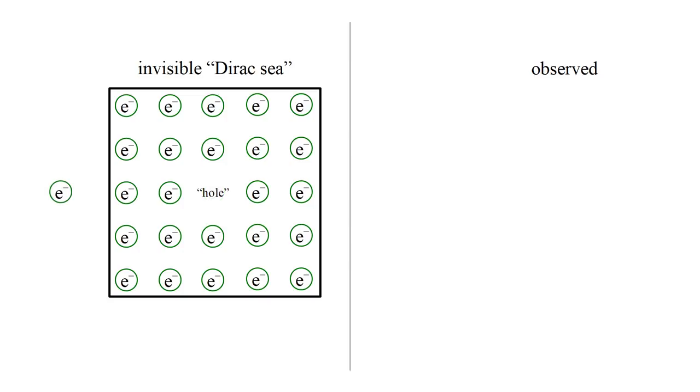By adding energy, we can pull an electron out of the Dirac sea into a visible, positive energy state. This leaves behind a hole in the Dirac sea. What will be observed is the apparent creation of an electron-positron pair.